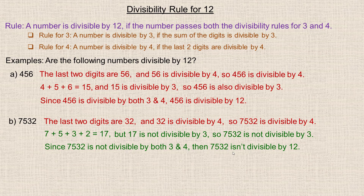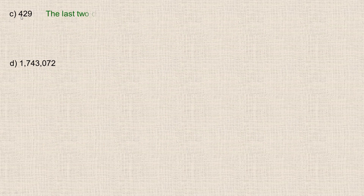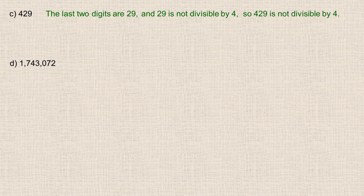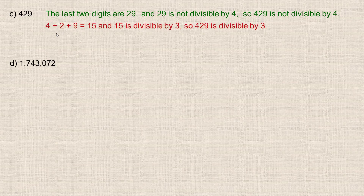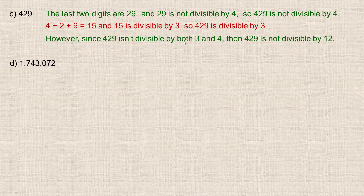It has to be divisible by both 3 and 4. On the second page, 429 is my first number. Let's do the 4-check first: the last two digits are 29, and 29 is not divisible by 4. So 429 is not divisible by 4, and you could stop here and say it's not going to be divisible by 12. If you happen to do the check for 3 first — adding 4, 2, and 9: 4 and 2 is 6, and 9 more is 15, which is divisible by 3. So 429 is divisible by 3, but it's not divisible by both 3 and 4, so it's not divisible by 12.